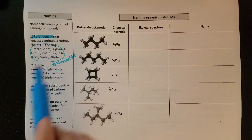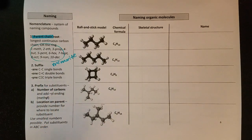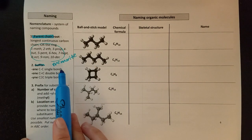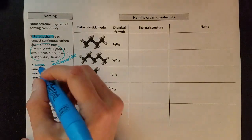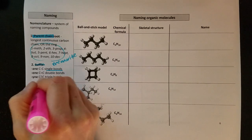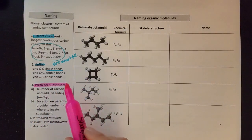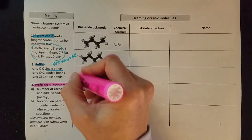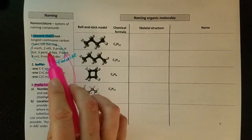Those are going to be part of our names. After that we'll add a suffix that tells us if we've got single bonds, double bonds, or triple bonds. In this chapter we're going to see all single bonds. Then we're going to use a prefix for those substituents, and that prefix will tell us how many carbons we have.